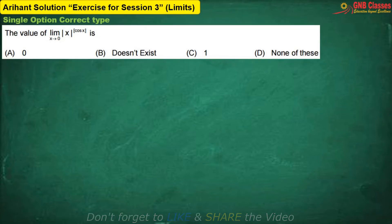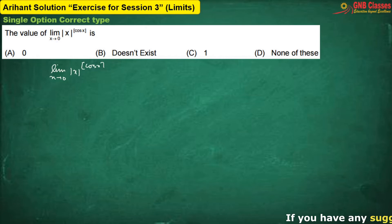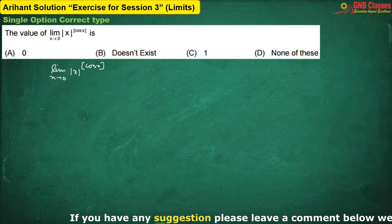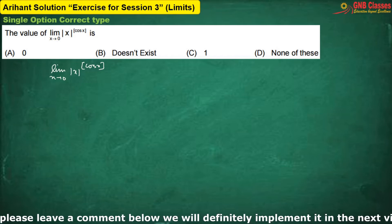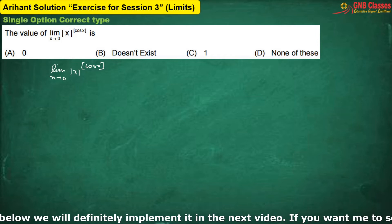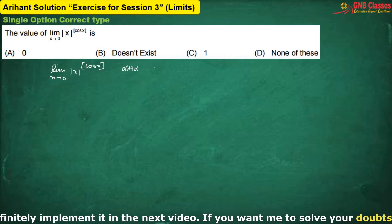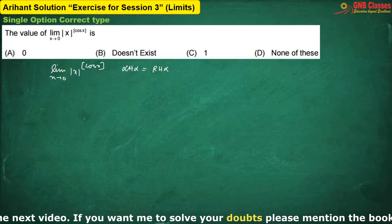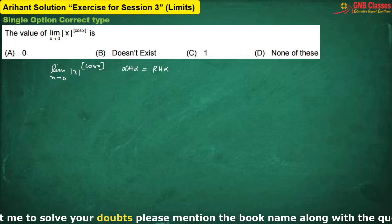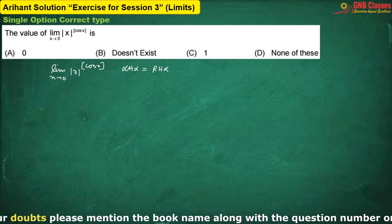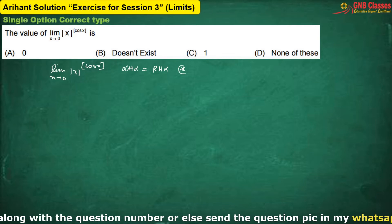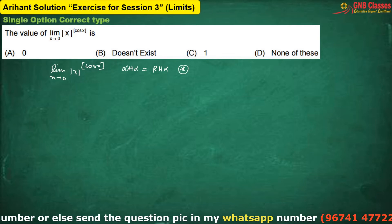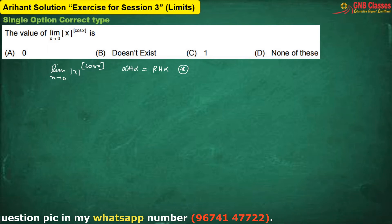In this problem, since there is a special function in the given limit, we will not directly solve the problem. Whenever you find that there is a special function given in a limit, we always find out its left-hand limit and right-hand limit. If these two limits are equal, then we will say that the limit exists; otherwise, we will say that the limit does not exist. Whenever there is a special function in a limit, we always check its existence first.